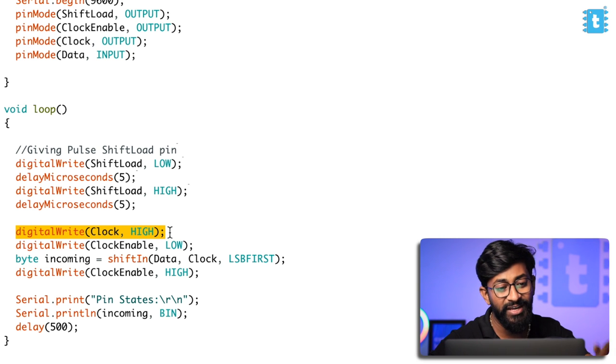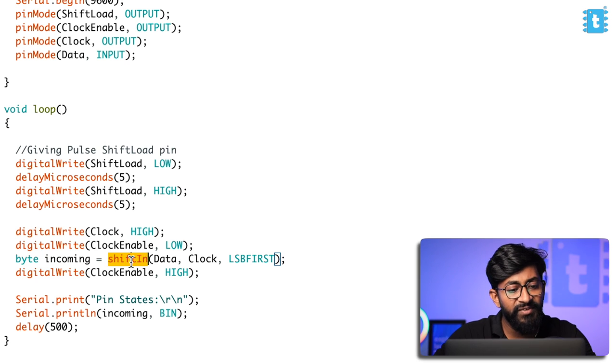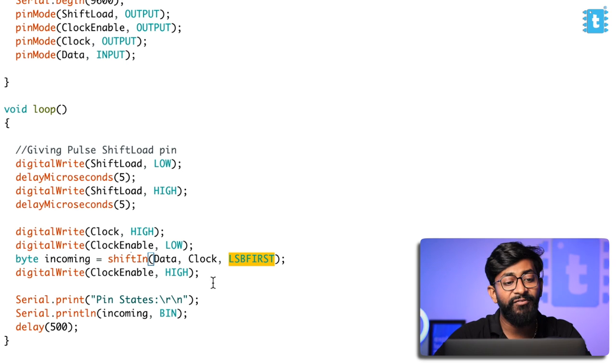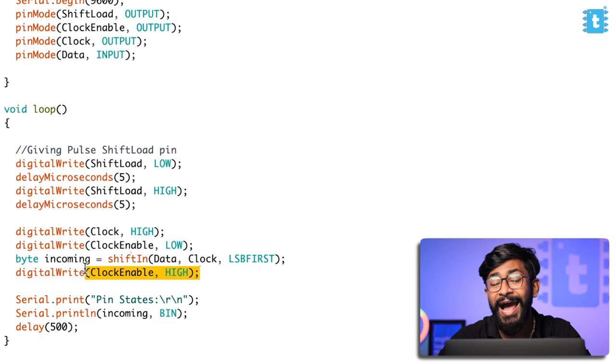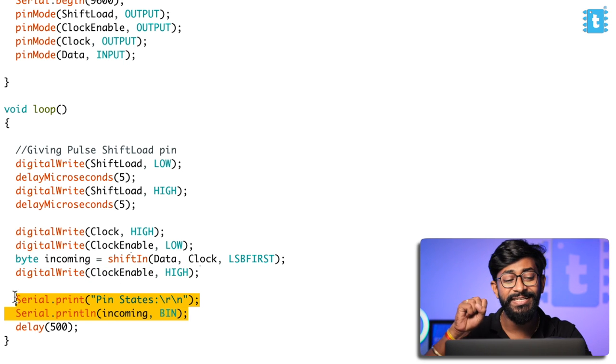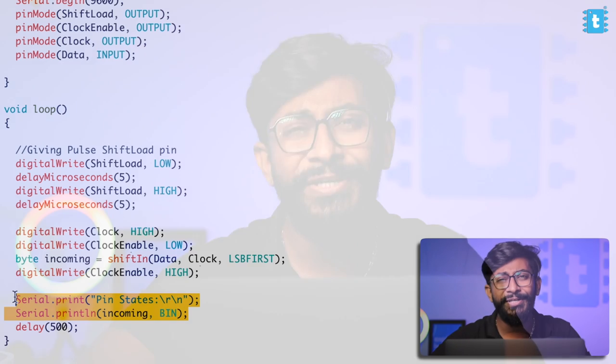Using the shiftIn function, we get the data through the data pin based upon the clock signal, and we take the data in LSB-first sequence. After that, we make the clock enable pin high, turning off the clock. Then we print all the received data serially on the serial monitor. That's the basic code to read data from all eight pins — one full byte — and print it through the serial monitor using a single data pin.